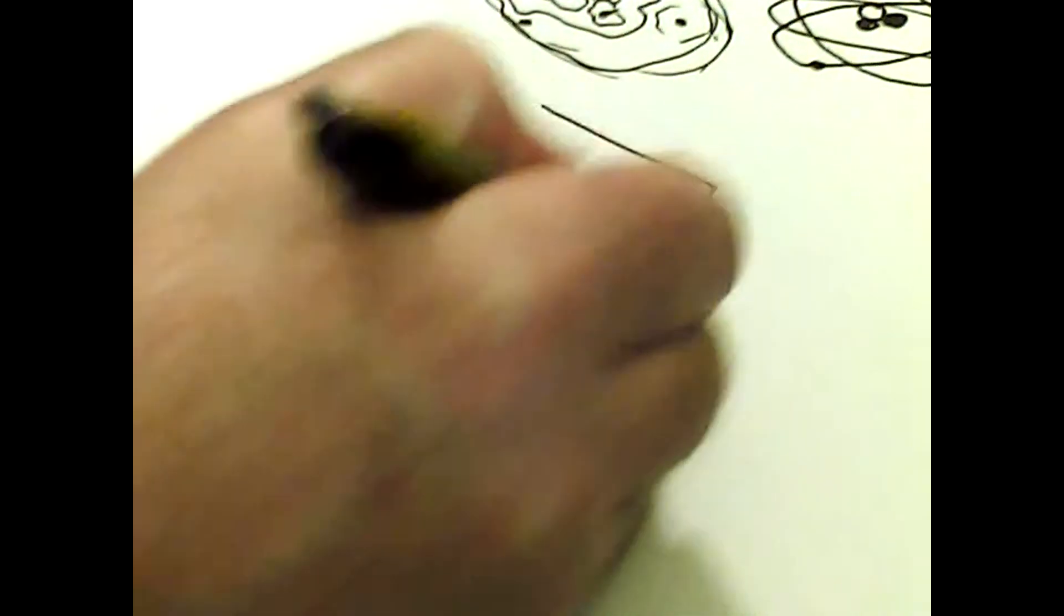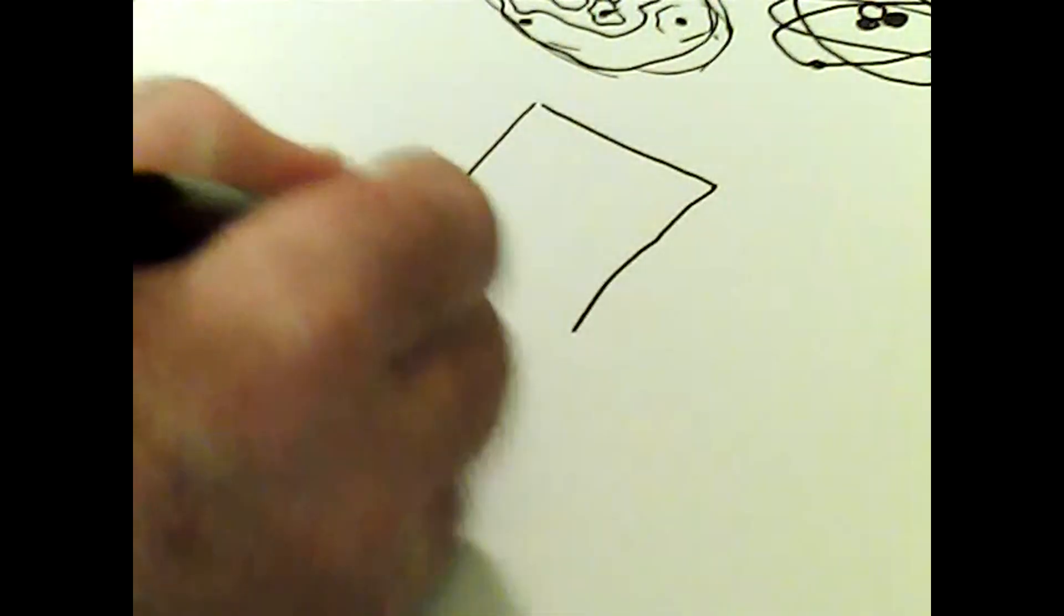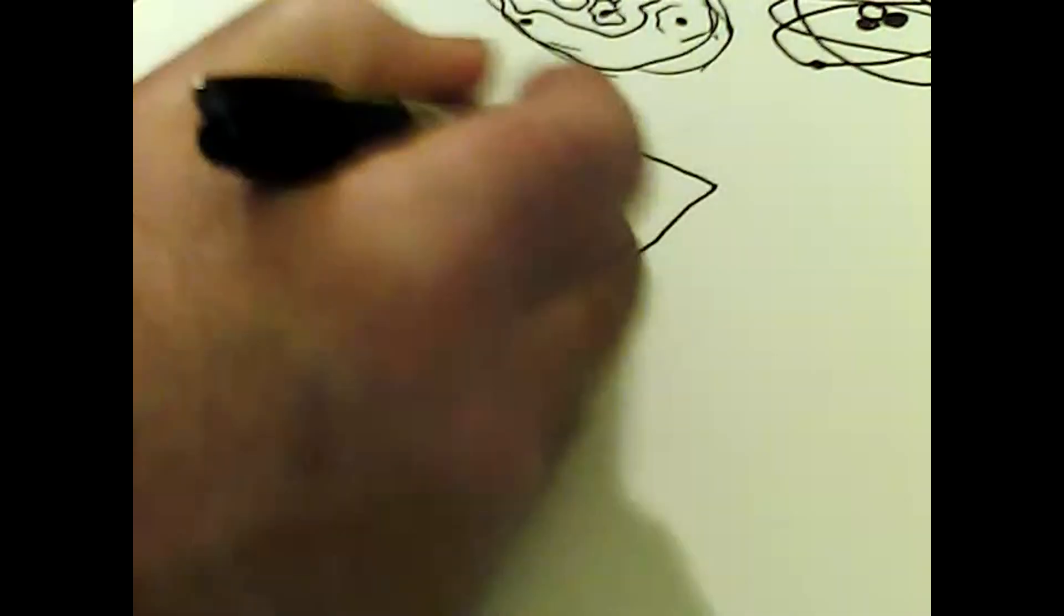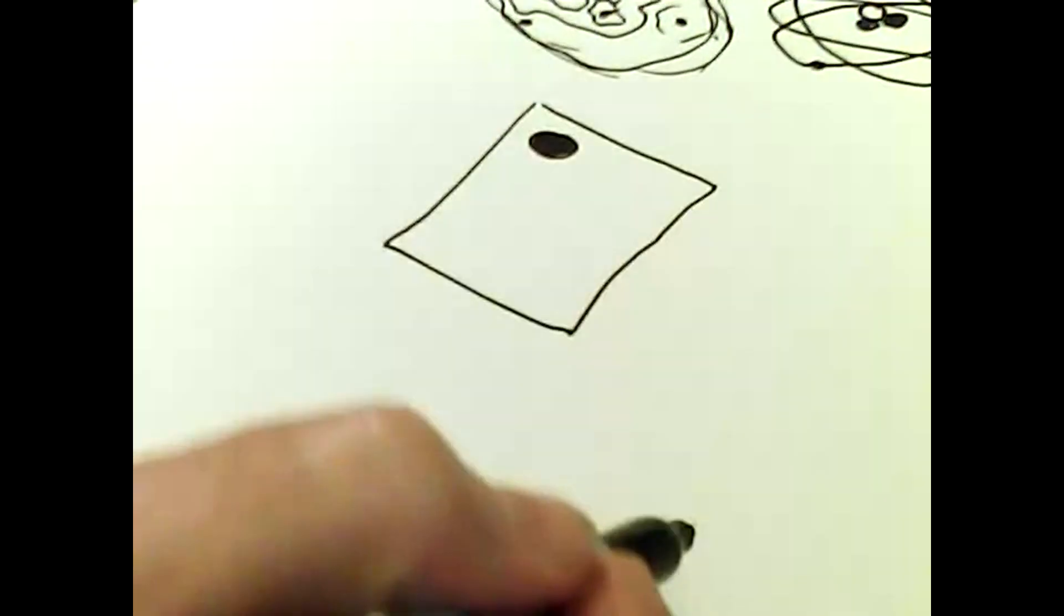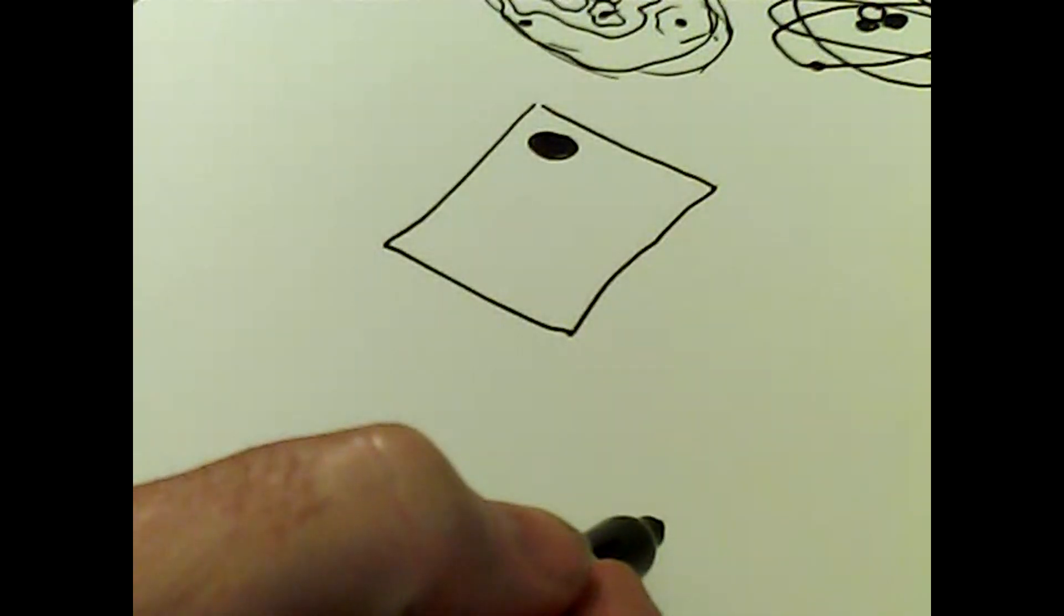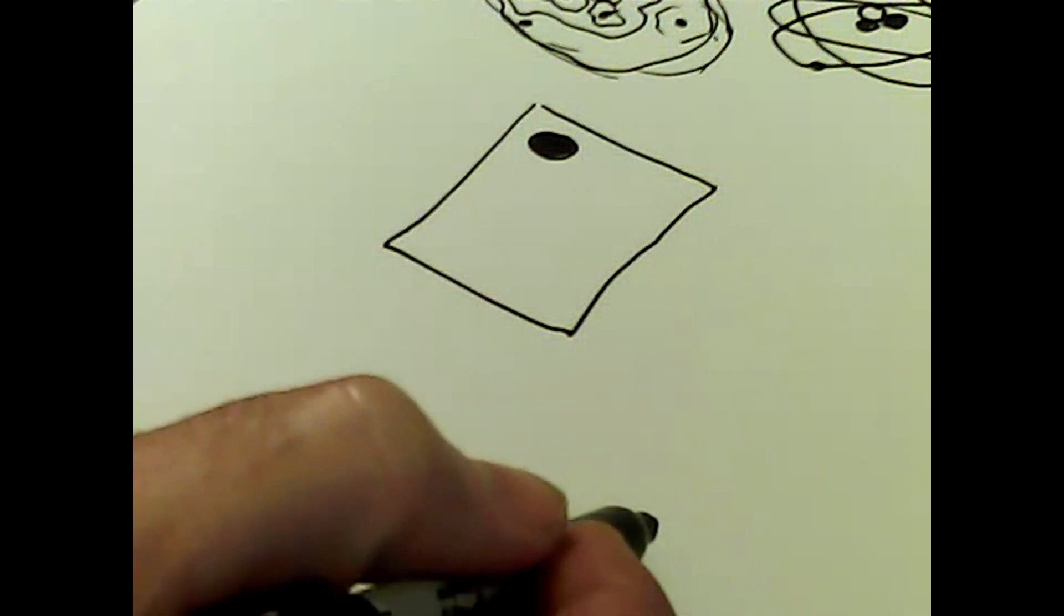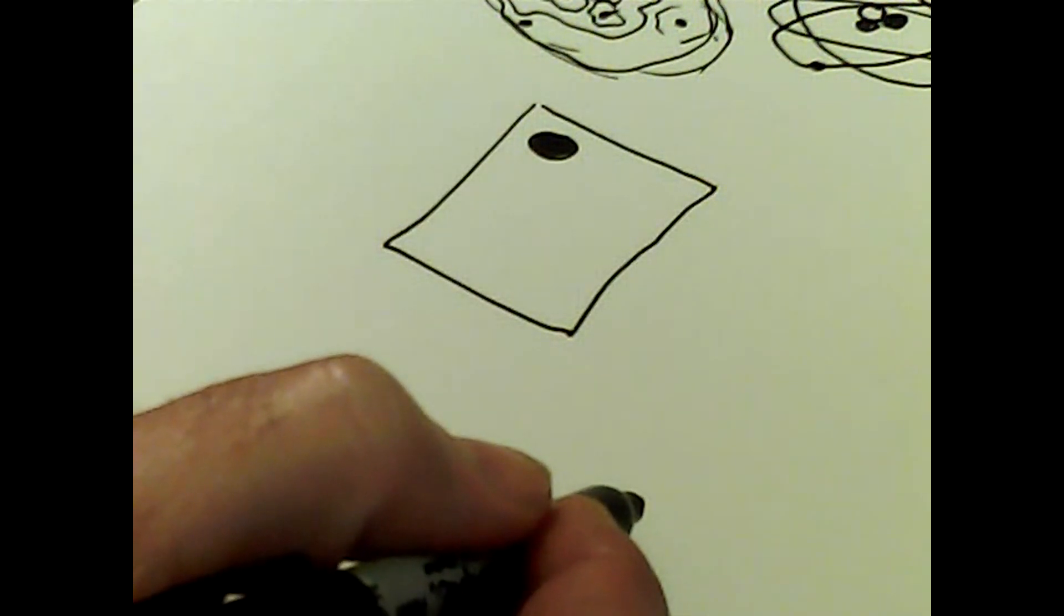Here we have a box. In this box we have a bowling ball, and the rest of the box is a vacuum. Now we're hunting for an electron inside this box—where's it likely to be?